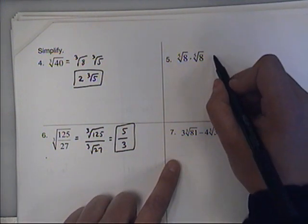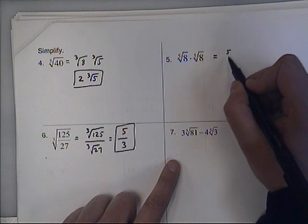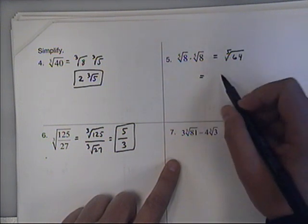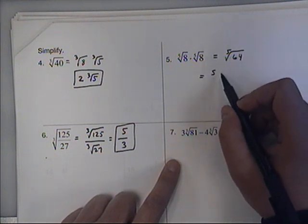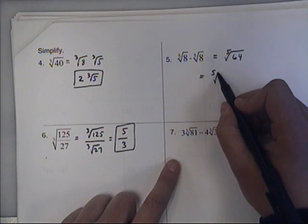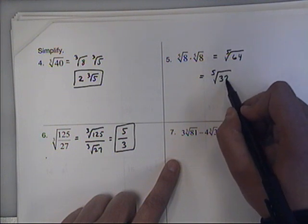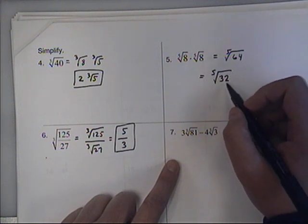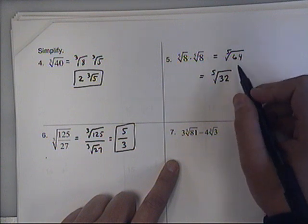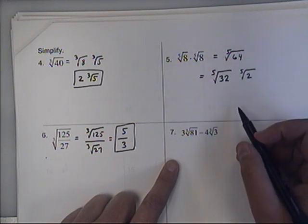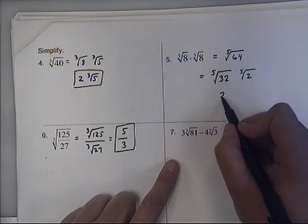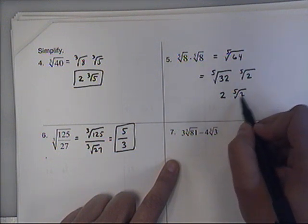This one, it's kind of tricky. You actually want to combine them back together. So if you multiply them together, you get the fifth root of 64. And then you can break it back apart. It's a little tricky. So fifth roots, hardly ever see them, but it turns out that 2 to the fifth power is 32, which is a factor of 64. 2 times 32 is 64. So the fifth root of 32 is 2, and then the fifth root of 2 separately.